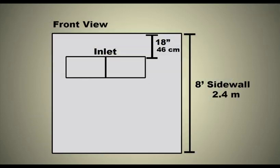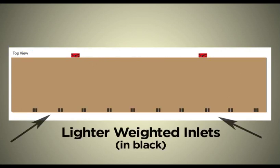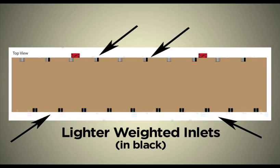Regarding placement: when possible, always install inlets down 18 inches or 46 centimeters from the top of the side wall. If minimum fans are on the side wall, the lighter weighted inlets are on the opposite wall from the fans. If there is not enough opening, place the remainder on the fan side.